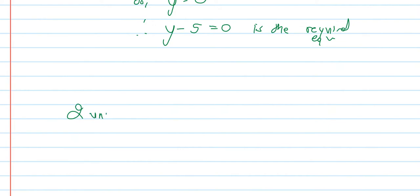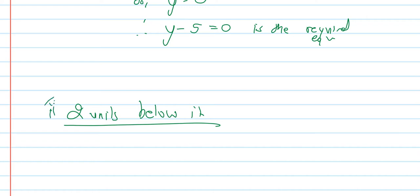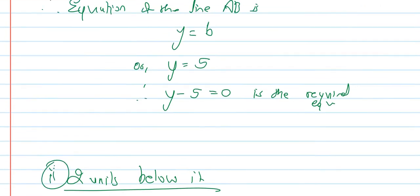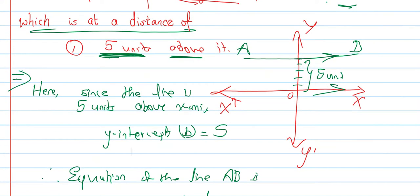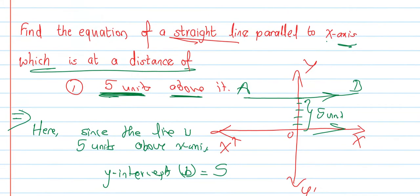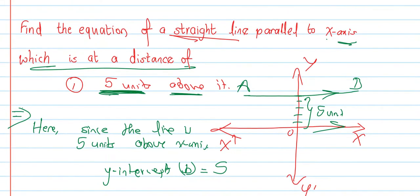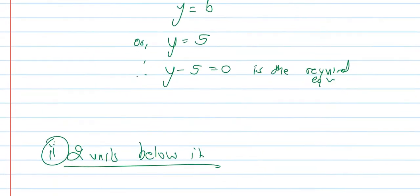Now the same type of question: the line is two units below the x-axis — which is at a distance of two units below it.